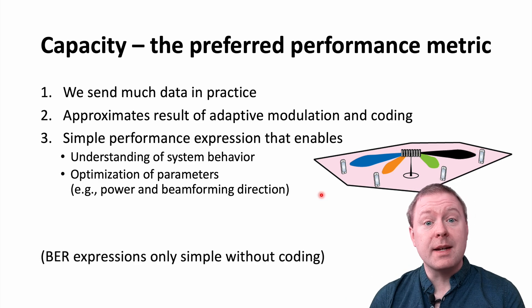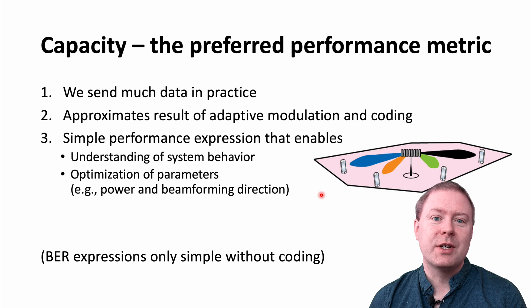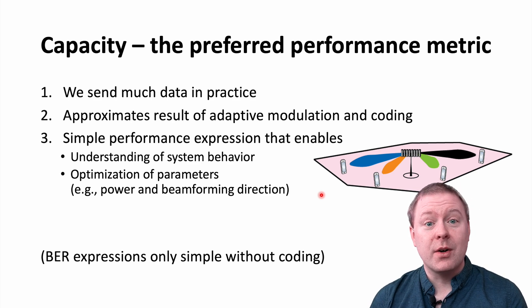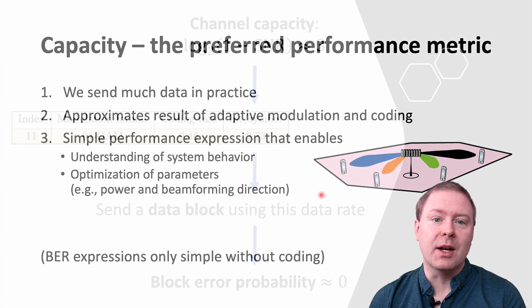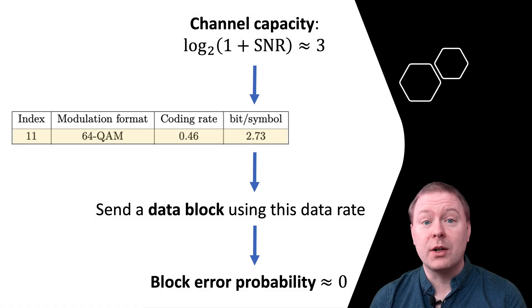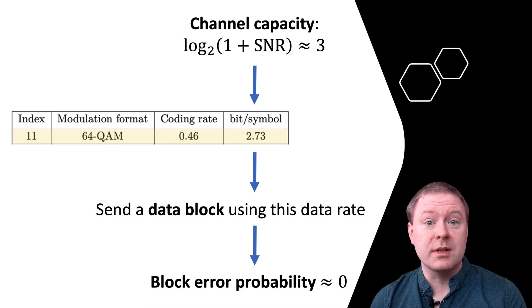By contrast, the bit error ratio expressions are only simple if you neglect channel coding, which is not particularly interesting in practice. In practical scenarios, you will just have to run big simulations to compute the BER. And if you do that, you can just as well compute the block error probability with your actual modulation and coding scheme. That would be the end performance metric, but the capacity is a good approximation for what data rates can you achieve a very small block error probability.